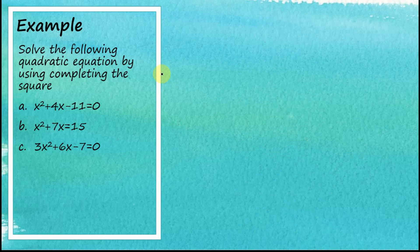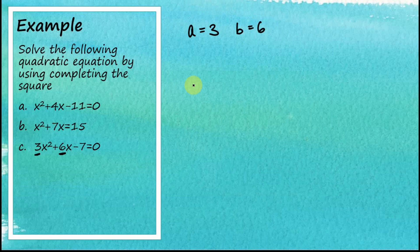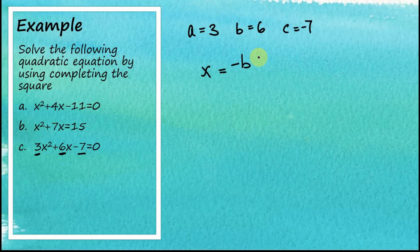Now let's look at question c. For question c, the coefficient of x² is 3, so a = 3. Our b equals 6, and our c equals negative 7. This equation is already in general form, so we don't need to rewrite it. Applying the quadratic formula: x = (−b ± √(b² − 4ac)) / 2a. With b = 6, we write negative 6 plus or minus the square root of 6² minus 4ac, divided by 2a where a = 3.